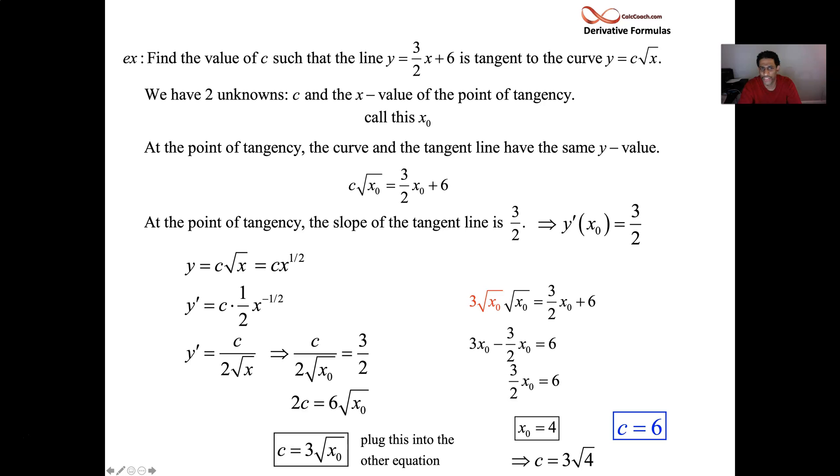That's the point of tangency: x₀ is 4. And c is related to that. c should equal 3 times the square root of 4, which is 6. We did it. We solved the question. c should equal 6, while x₀ should equal 4. If you pick c to be 6, that will be your tangent line at the point when x₀, the x value of the point of tangency, is 4.